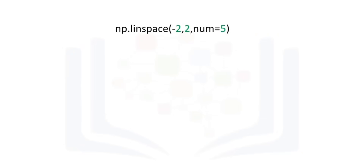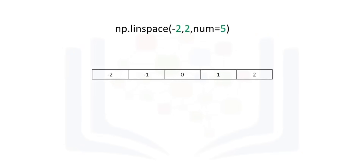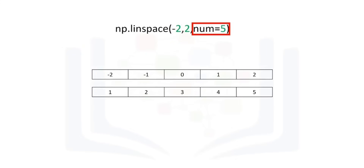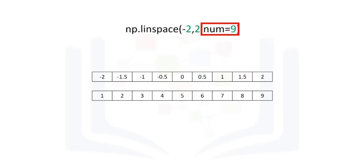A useful function for plotting mathematical functions is linspace. Linspace returns evenly spaced numbers over a specified interval. We specify the starting point of the sequence, the ending point, and the parameter num, which indicates the number of samples to generate — in this case 5, with a space between samples of 1. If we change num to 9, we get 9 evenly spaced numbers over the interval from negative 2 to 2, with a difference between subsequent samples of 0.5.